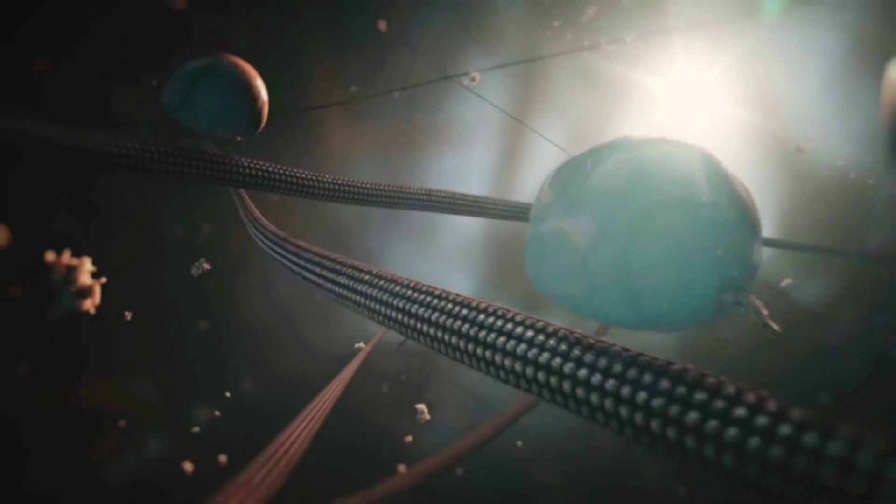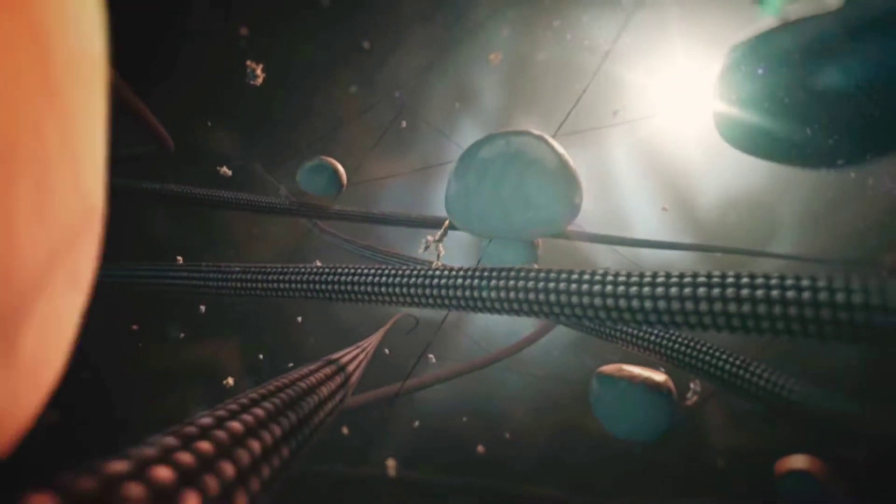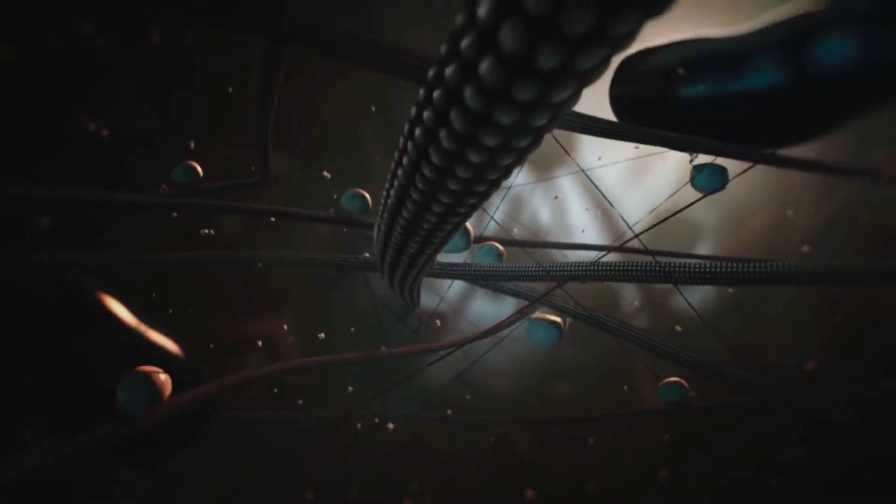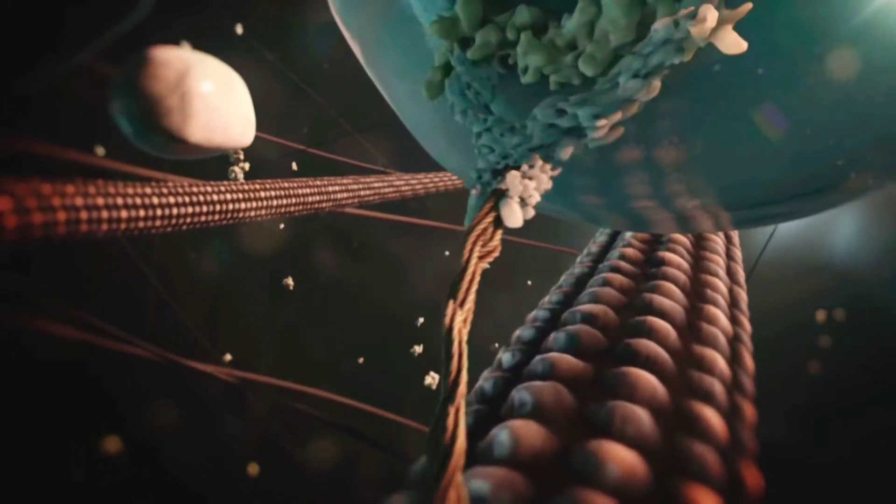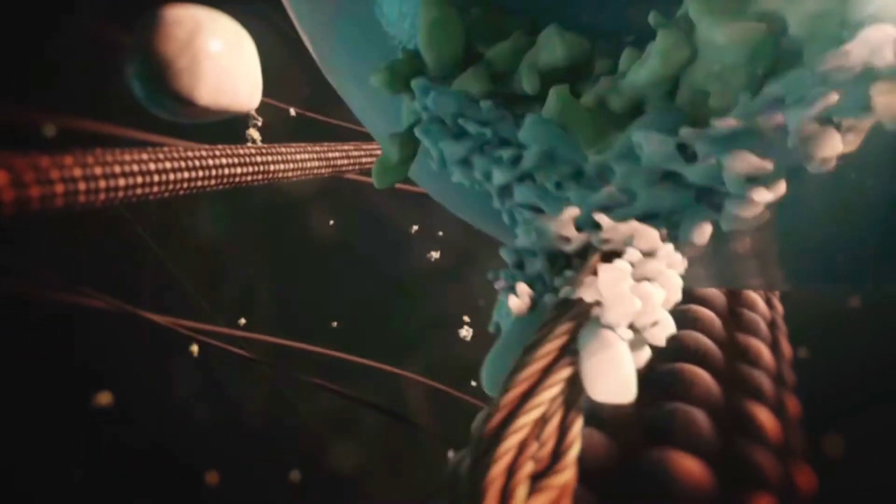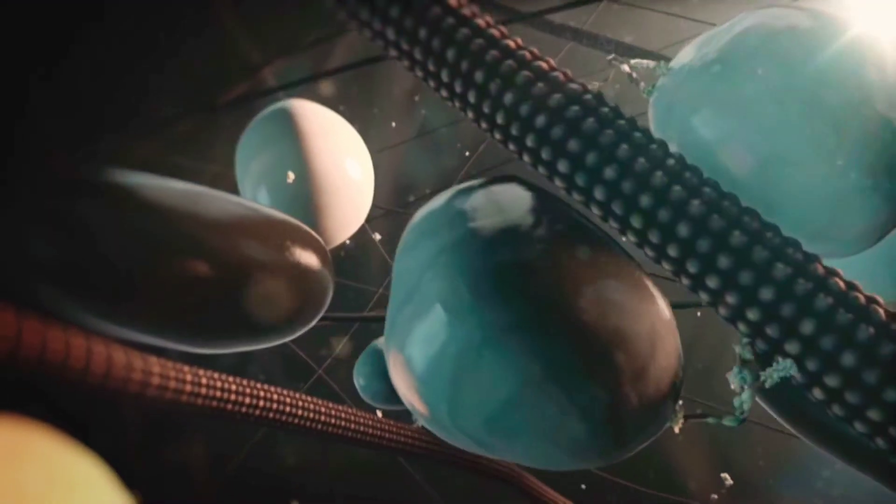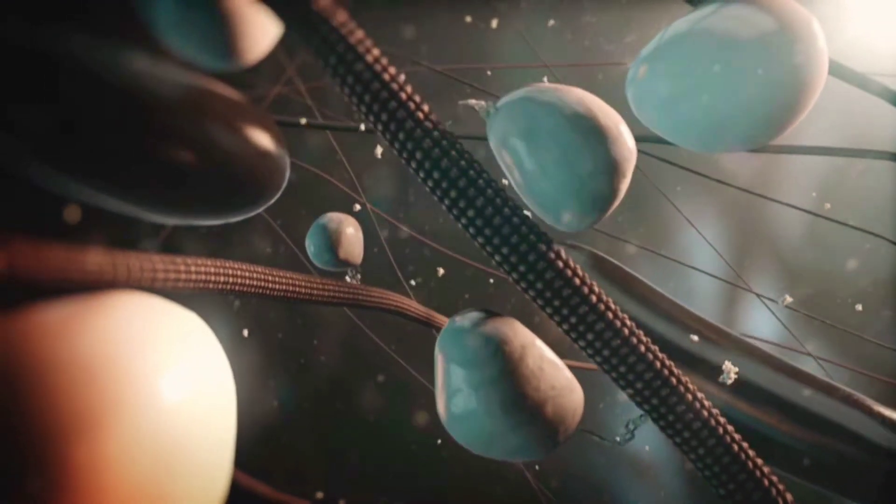Two types of motor protein, kinesins and dynein, transport cargos along microtubules. Adapter proteins help to couple the correct cargo with the right motor protein. Kinesin and dynein move in opposite directions. Dynein moves towards the minus end whereas most kinesins move towards the plus end.